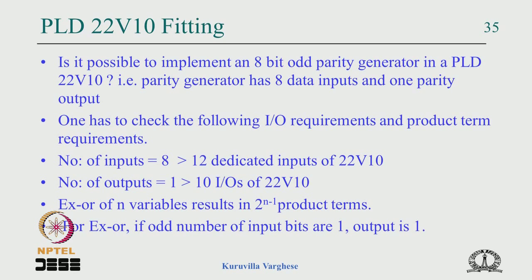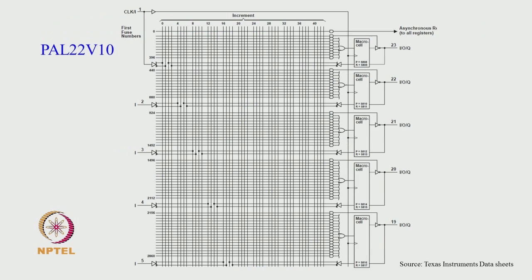Here is an exercise: is it possible to implement an 8-bit odd parity generator in a 22V10 PLD? The parity generator has 8 data inputs and 1 parity output, and is essentially i1 XOR i2 XOR i3 and so on. Two things to check: whether inputs and outputs are sufficient, and whether the number of product terms is enough.